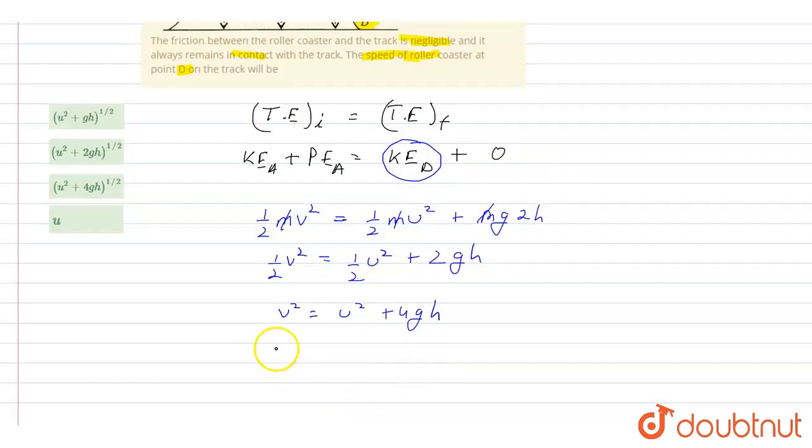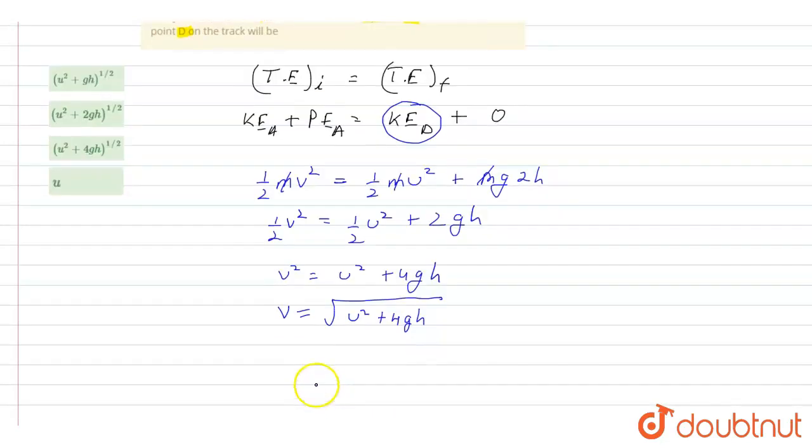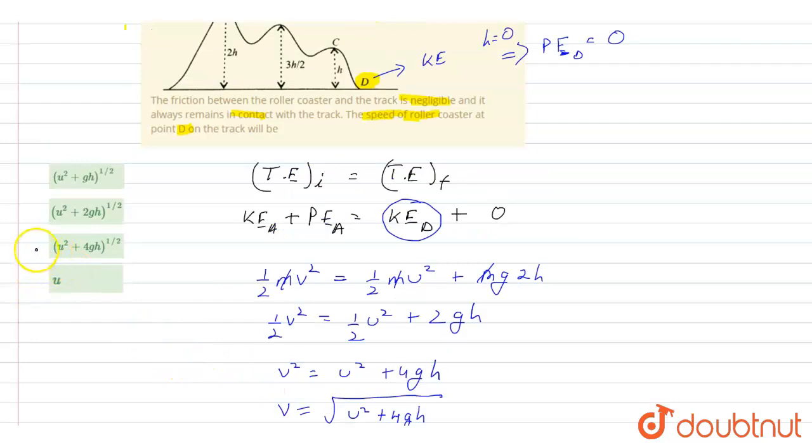Taking under root on both sides, V will be equal to under root U square plus 4GH. So to match the options, I can write it in terms like this: U square plus 4GH raised to the power 1 by 2. Therefore, the correct option should be C.